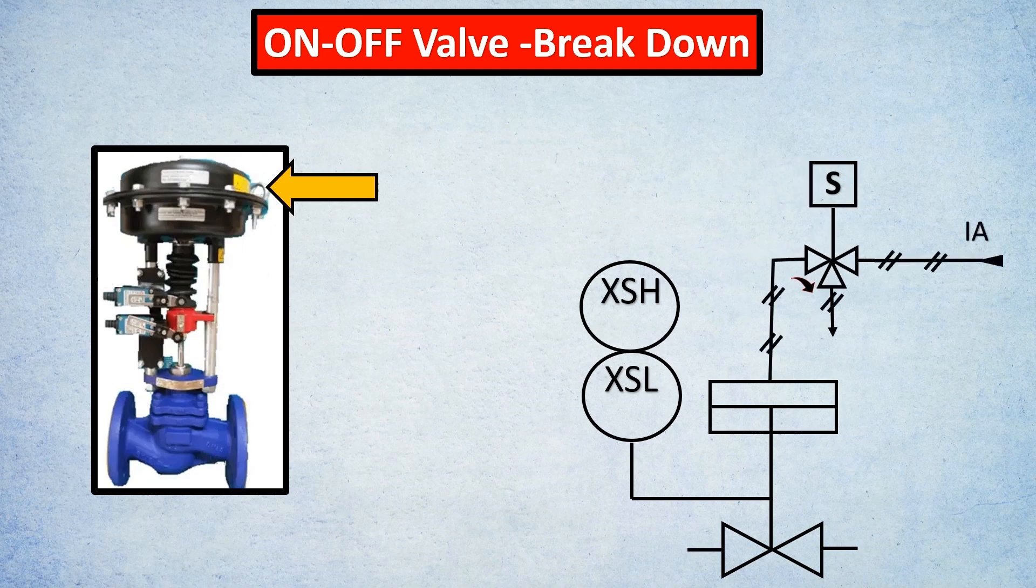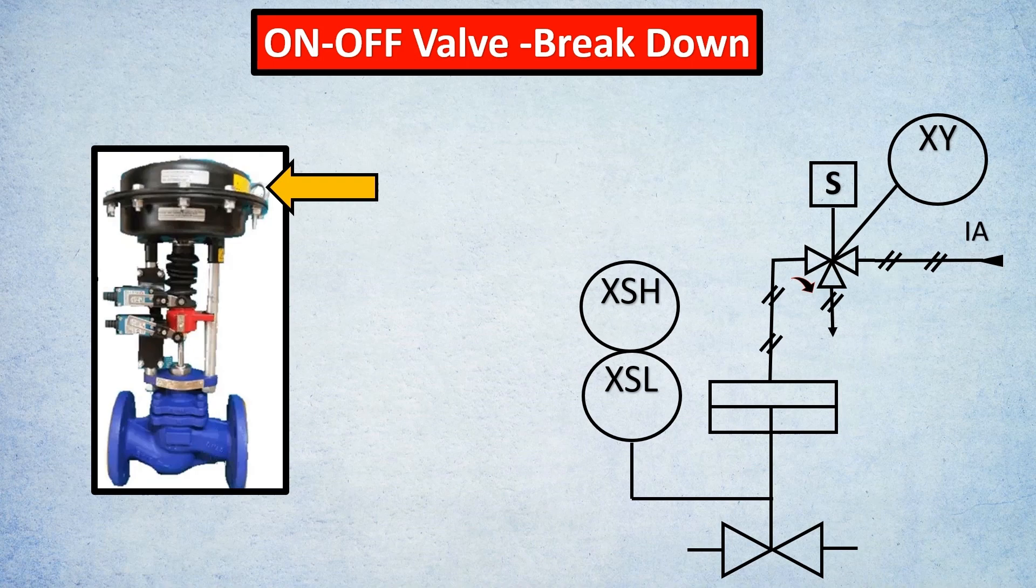You need an air supply for the valve to work. Here's our solenoid valve with the instrument air. Usually a solenoid valve has to be named, so we put XY there. For limit switches, it's usually XSH or XSL. The H stands for high and L stands for low. Sometimes it is open.